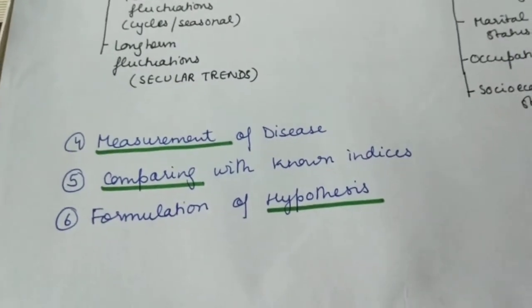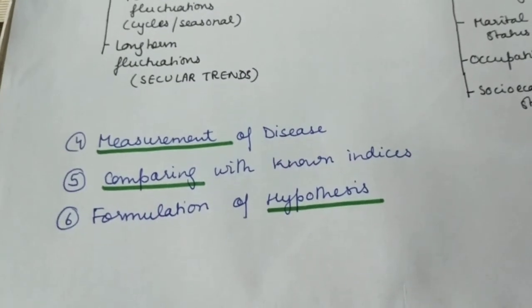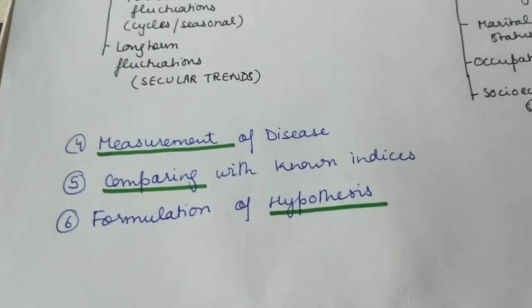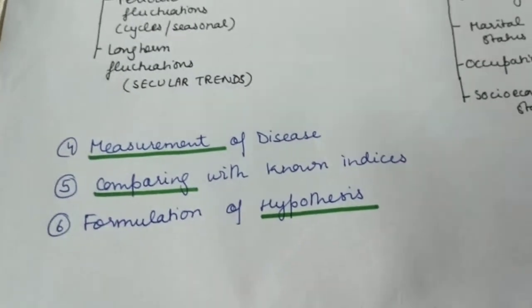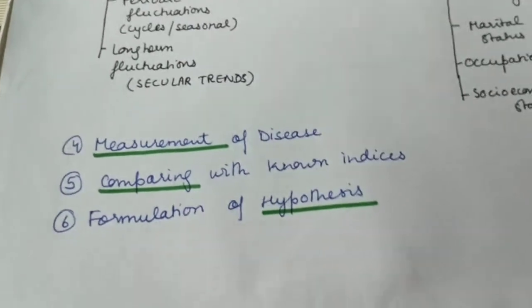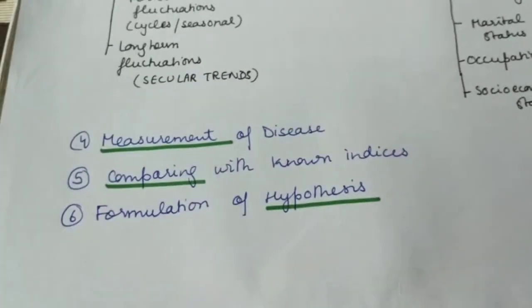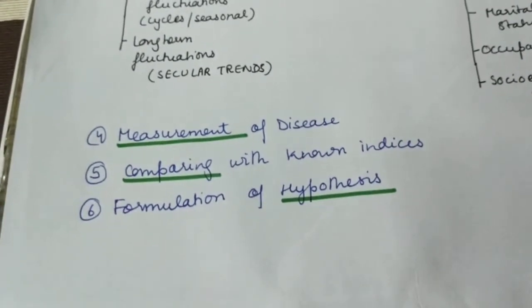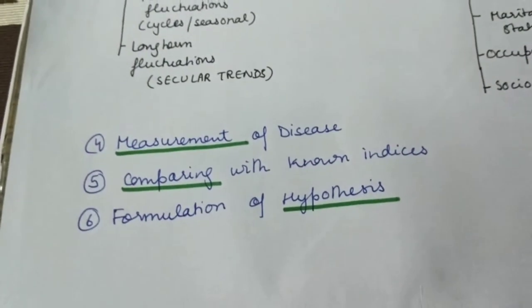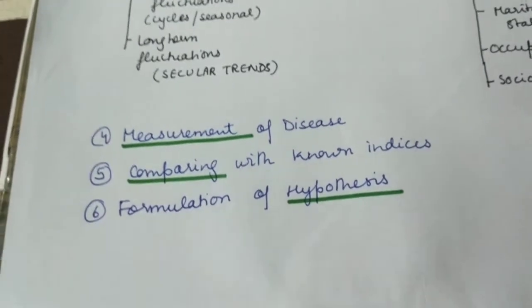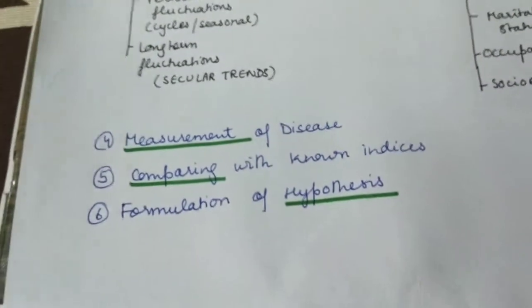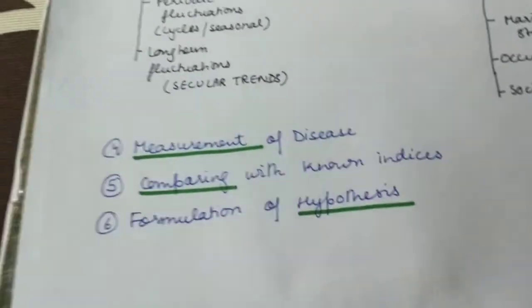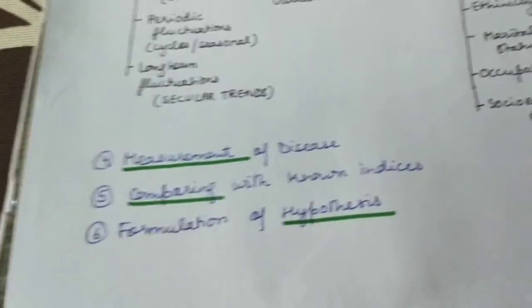The hypothesis should specify the characteristics of a person, a specific cause being considered, the expected outcome, the dose-response relationship, and the time-response relationship. The uses of descriptive epidemiology include: calculating the magnitude of disease, providing clues to disease etiology, and obtaining background data for organizing and evaluating health programs. Descriptive epidemiology can contribute significantly to further studies.